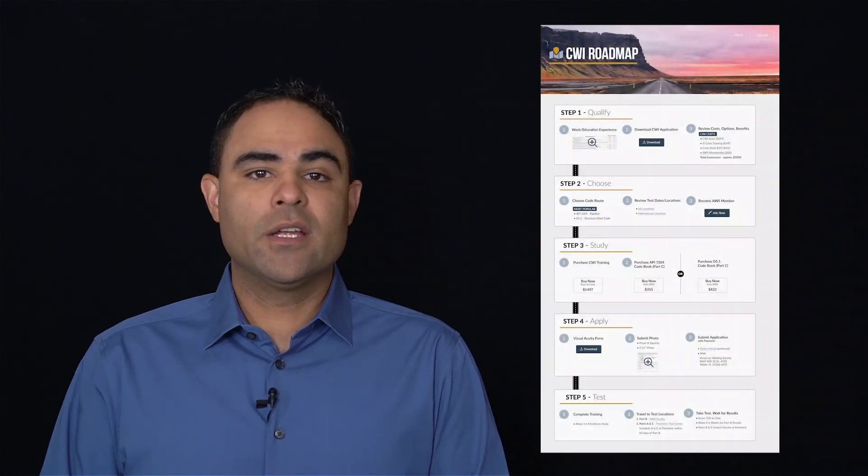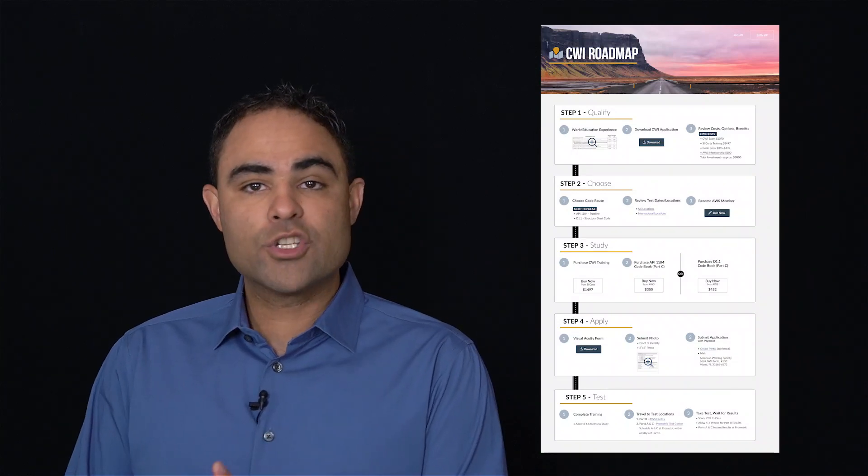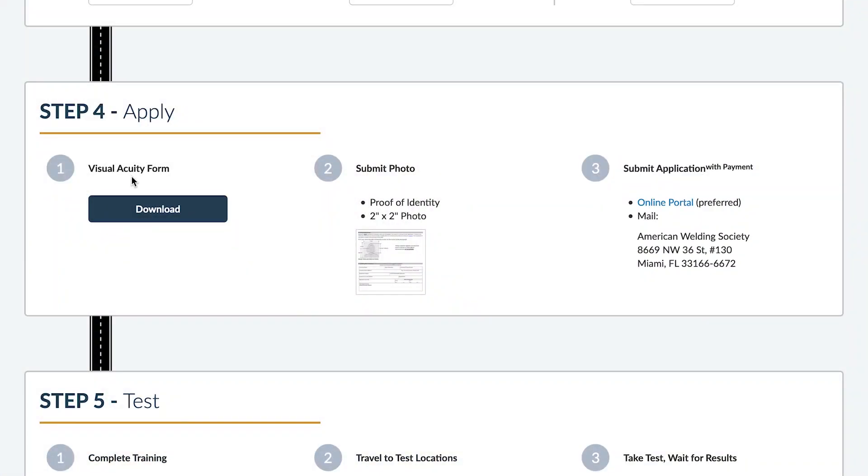After you've started studying, move on to step four, which is to apply. You will complete your application and submit to AWS. Don't wait until you finish your studies. Do this quickly so you can confirm the test date and location that works best for Part B. If you wait too long, that test date may not be available.